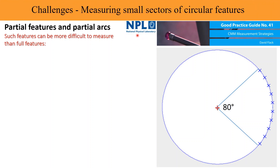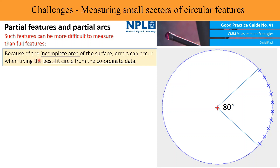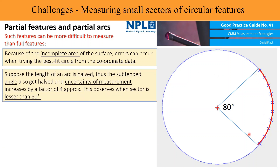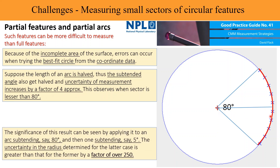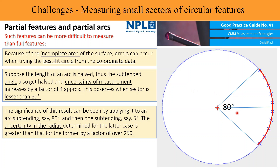In this slide, an extract from the NPL UK Good Practice Guide No. 41 is taken — Partial features and partial arcs. Such features can be more difficult to measure than full features. Because of the incomplete area of the surface, errors can occur when trying to best fit a circle from the coordinate data. If the length of an arc is halved, the subtended angle also halves and the uncertainty of measurement increases by a factor of 4. This is observed when the sector is less than 80 degrees.